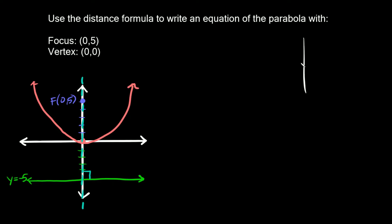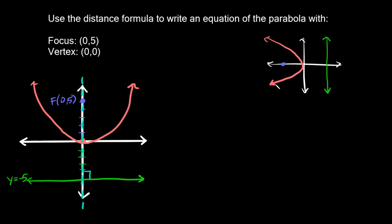That's important to point out because if you had a parabola that was sideways like this, in that case the focus would again be on the inside of the parabola, right here — the parabola is always eating the focus. The vertex is still at (0,0), and the directrix you would draw vertically. Why? Because the axis of symmetry runs horizontally, and the directrix is always perpendicular — it always creates a 90-degree angle with the axis of symmetry. That's a heads-up in case your problem has a sideways parabola.